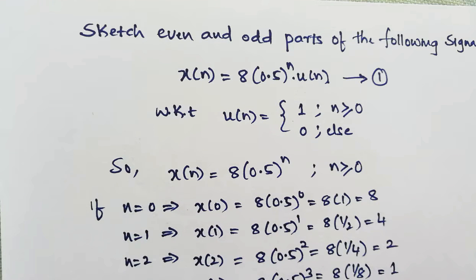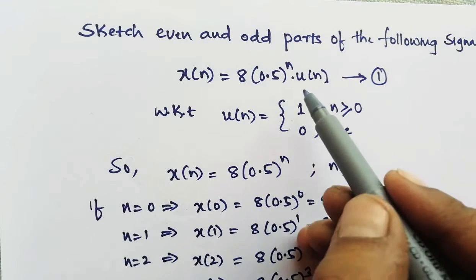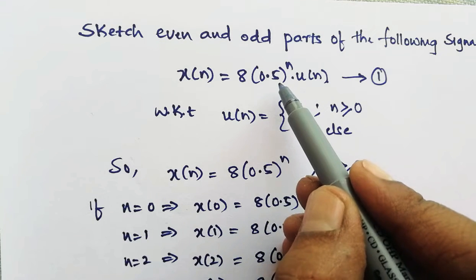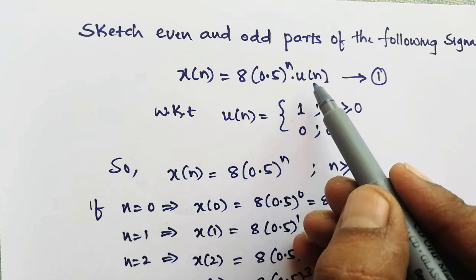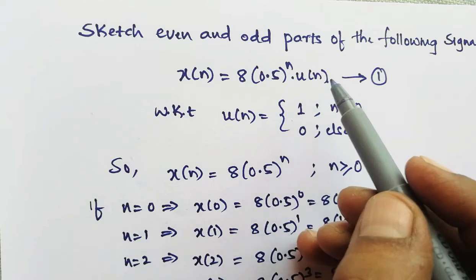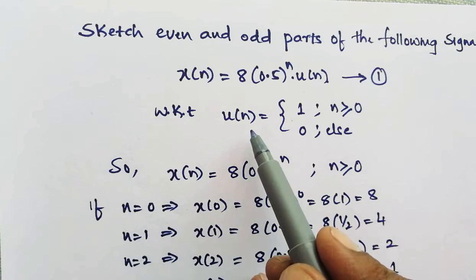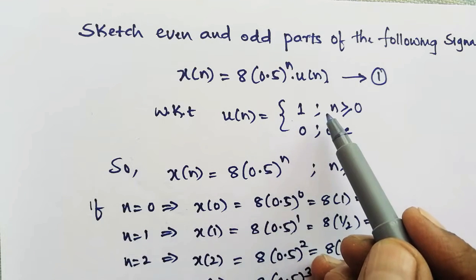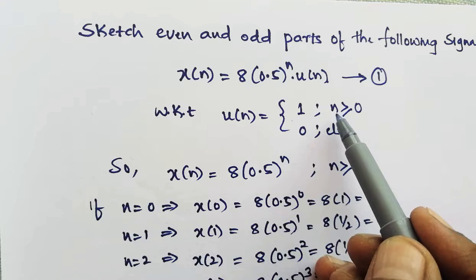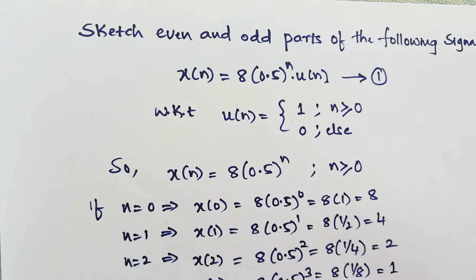First, we have to know what exactly the given signal is. It is the multiplication of an exponential signal and a step signal. We know the definition of step signal: u of n equals 1 if n is greater than or equal to 0, else it is 0.